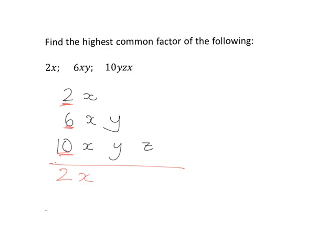So my highest common factor is 2x. To verify: 2x can be written as 2x times 1, 6xy as 2x times 3y, and 10xyz as 2x times 5yz. So 2x is indeed a common factor of all three expressions.